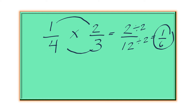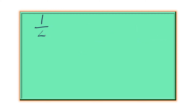1 fourth times 2 thirds. How do we multiply two fractions using diagrams? So 1 fourth and 2 thirds — let's use that same example: 1 fourth times 2 thirds.